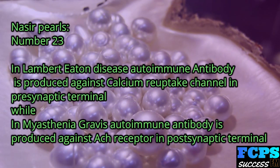Nasir Pearl number 23: In Lambert-Eaton syndrome, an autoimmune antibody is produced against the calcium reuptake channel in the presynaptic terminal. In myasthenia gravis, an autoimmune antibody is produced against the acetylcholine receptor in the postsynaptic terminal.